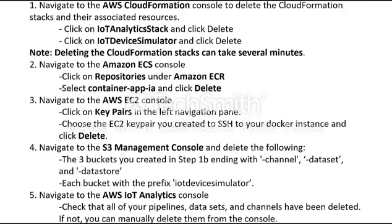Navigate to the Amazon ECS console and click on Repository under Amazon ECR. Select Container-App-IA and click Delete. Next, navigate to the AWS EC2 console and click Key Pairs in the left navigation pane. Choose the EC2 key pair you created to SSH to the Docker instance and click Delete. Then navigate to the S3 management console and delete the three buckets you created previously, ending with dash-channel, dash-dataset, and dash-datastore, as well as each bucket with the prefix IoT Device Simulator.